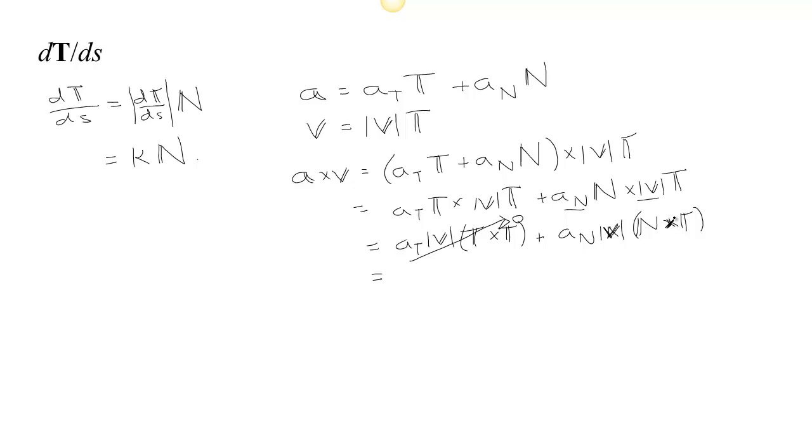N cross T, that's the opposite direction of T cross N, which is B. So this is equal to a sub n times v times T cross N would be in the direction, it would be actually negative B. N cross T is in the opposite of T cross N, and T cross N is B, so that's why this is negative B.